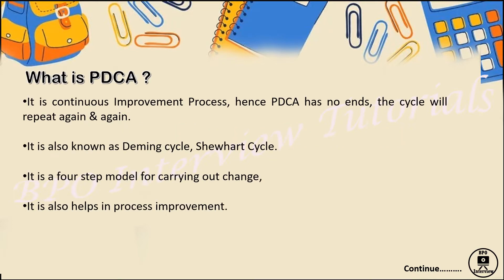So what is PDCA? You may have seen my last video on continuous and continual improvement — if you haven't, please go watch that. PDCA is a continuous improvement process wherein there is no end; the cycle will repeat again and again. When I go through the example, you will understand what I am trying to explain here.